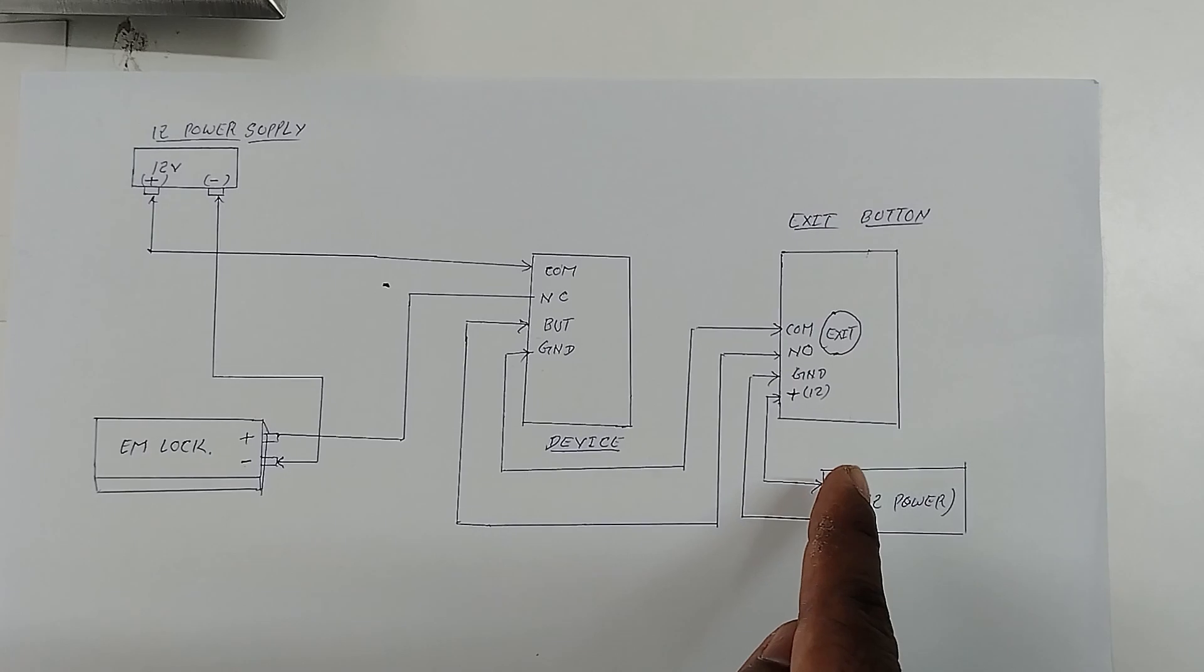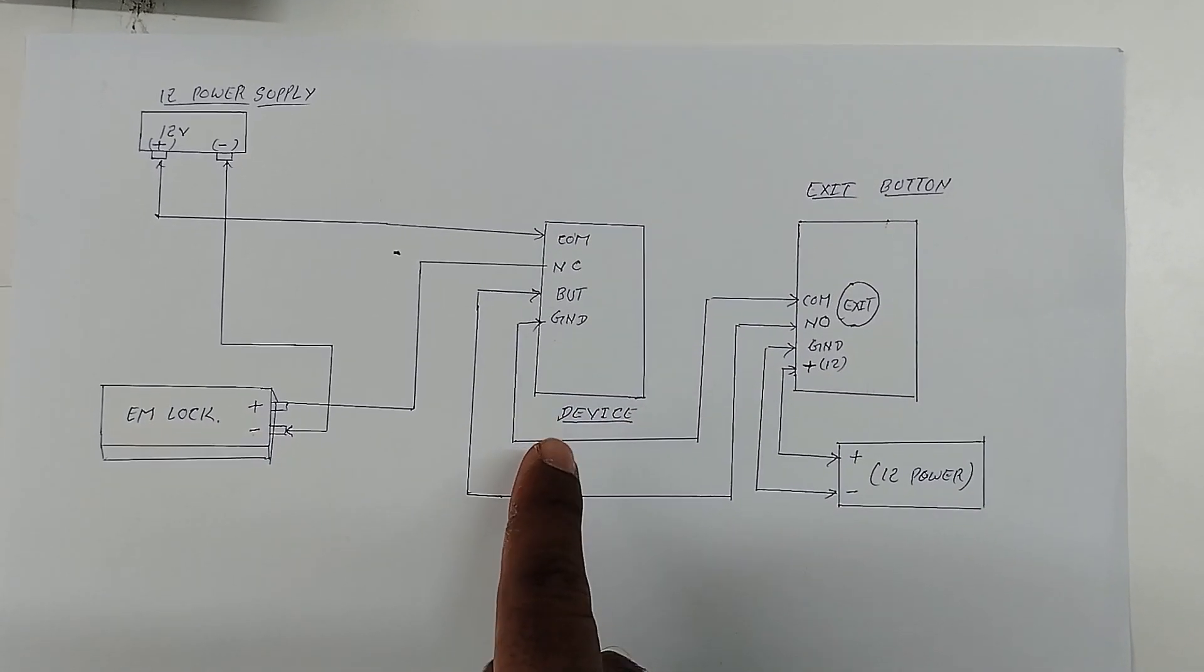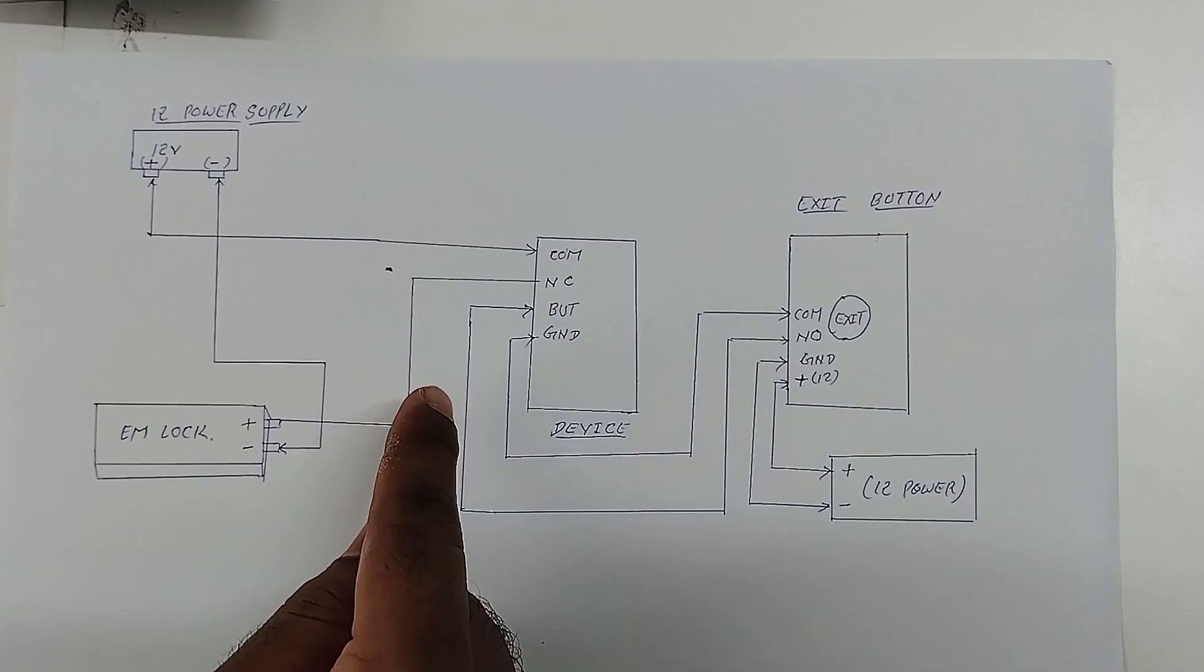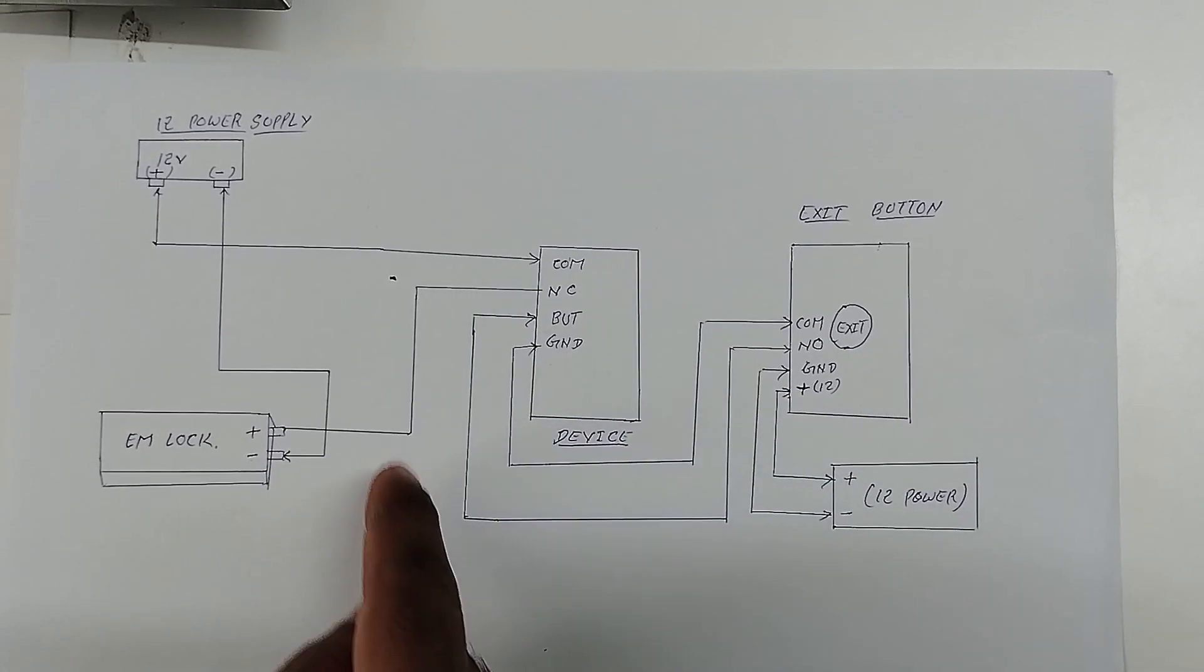Now I am going to explain how to connect the exit button with SF100 device. From the exit button, comm should be connected with the device ground and NO should be connected with the button.